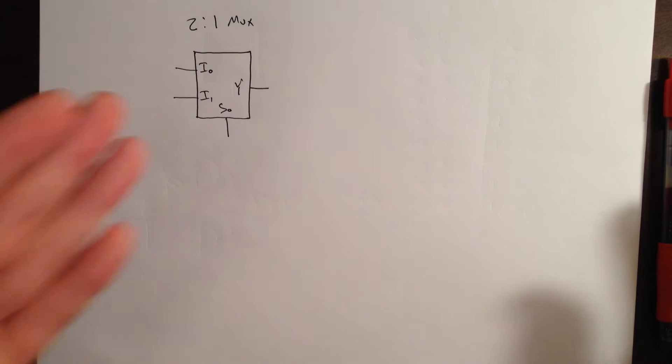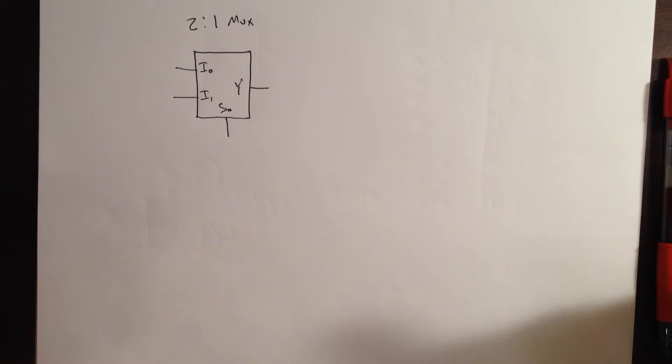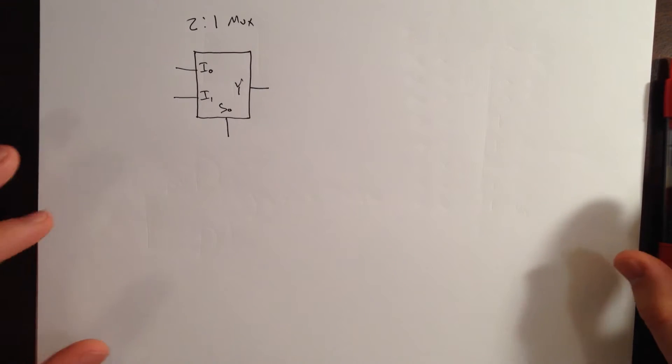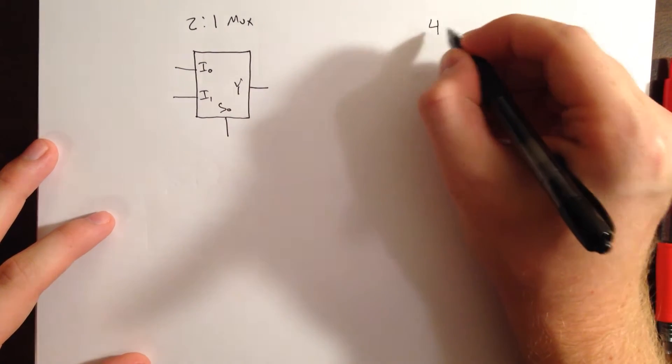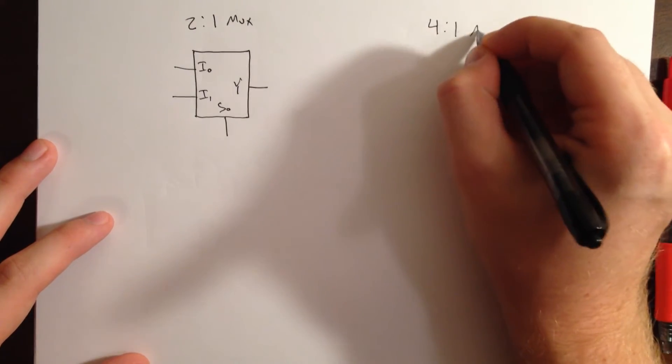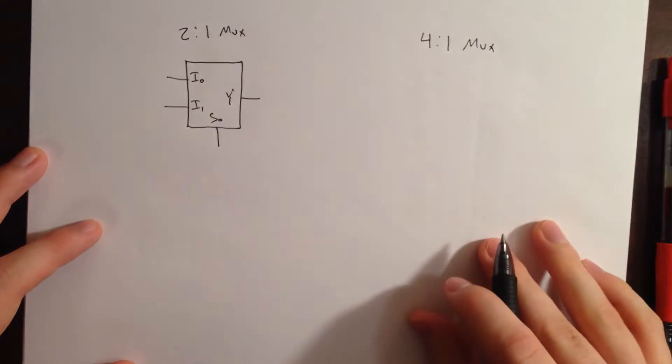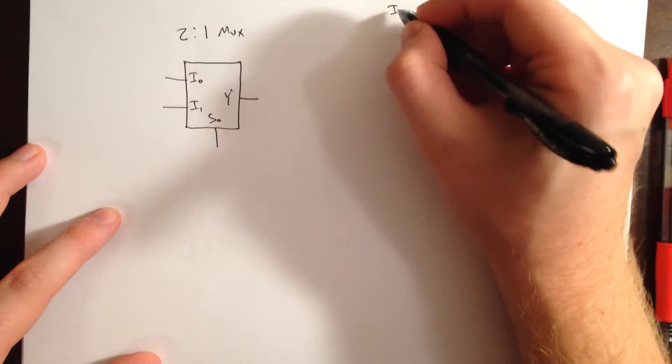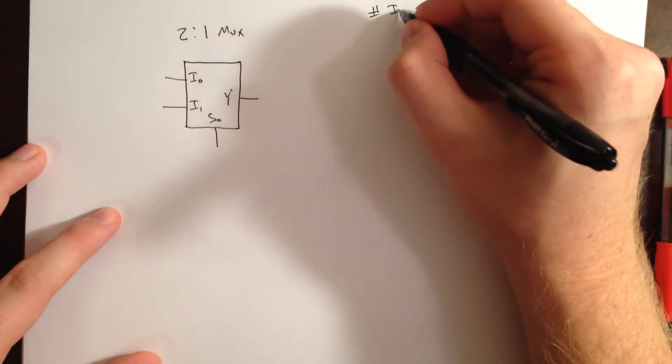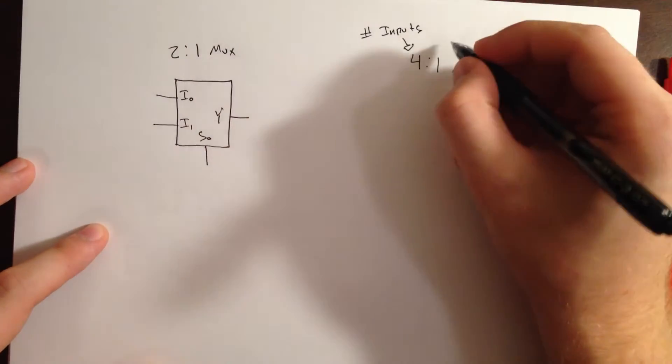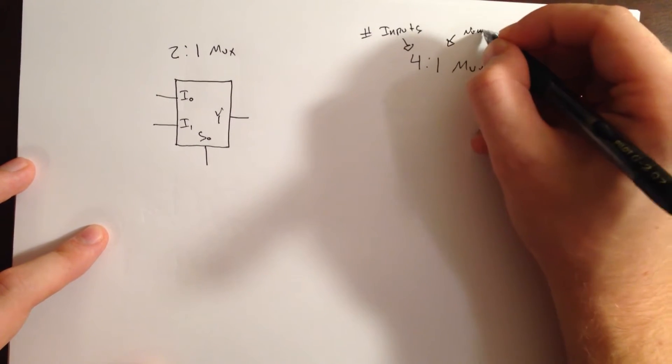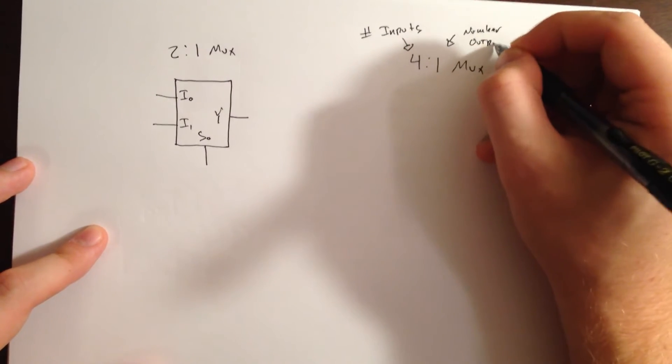So, we can use this 2:1 multiplexor to build bigger multiplexors. We'll build a 4:1 multiplexor and then we'll build an 8:1 multiplexor. Let's do our 4:1 multiplexor. This 4 right here is just the number of inputs and the 1 is just the number of outputs.